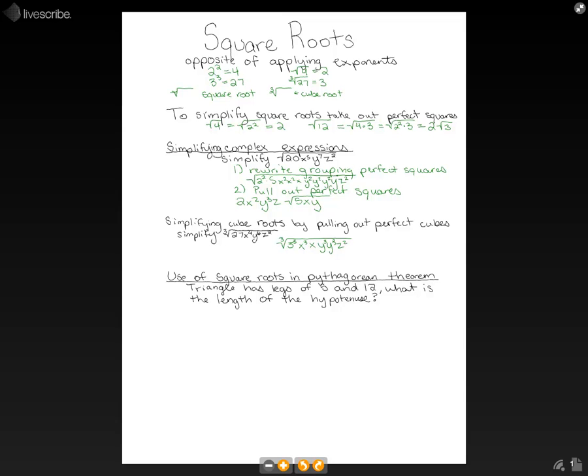Now if we pull out our perfect cubes, our three is going to come out. One x will come out. Two y's will come out, and that's all. And what we have left over then on the inside is our x z squared. So that's a kind of different example about using cube roots instead of our square roots we're used to.